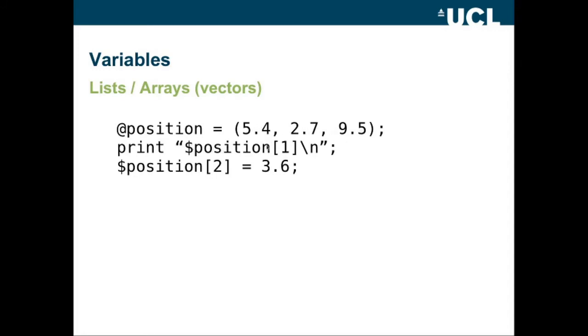Now when we print position one, so this would be 2.7, because we're only referring to a single item, not to the whole list, we now use a dollar instead of an at. So print dollar position one backslash n would print 2.7. And we can update a particular position or a particular item in the position array or list by saying dollar position two, that's this one, equals 3.6. So that would change our 9.5 to 3.6.